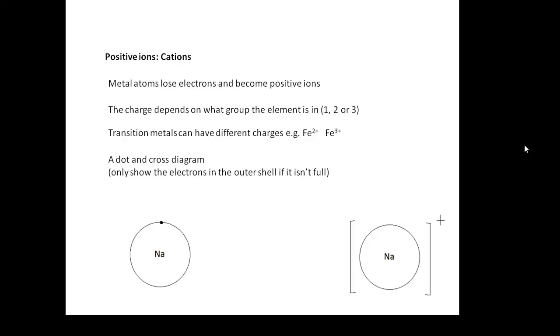Now, a dot and cross diagram: if the outer shell is full, then we don't draw anything. If the outer shell isn't full, you can represent the electrons with either a dot or a cross. For the sodium ion, it's just no dots or crosses because its shell is full now, but in brackets with a plus to show that it has a positive charge.